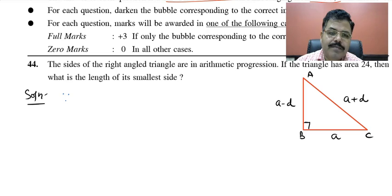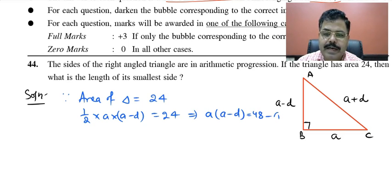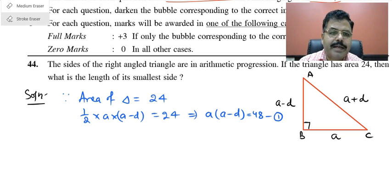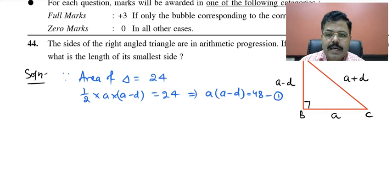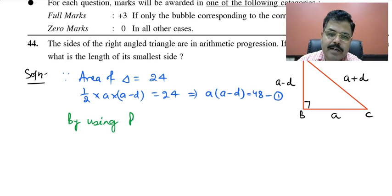Since area of triangle is 24, we write one half times base times height equals 24, so a times (a minus d) equals 48. That gives us equation one. Now, since these are sides of a right angle triangle, we apply the Pythagoras theorem.